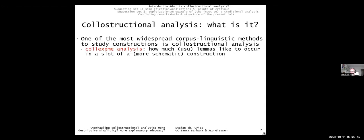The first method is called colexeme analysis. It's concerned with how much lemmas — often verbs, but not necessarily — like to occur in the slot of a typically more schematic construction. There's been a lot of work on grammatical constructions having to do with tense, aspect, modality, and argument structure constructions in the Goldbergian sense. The idea is to take an argument structure construction, look at a grammatically defined slot, and see which words like to go there more than others.